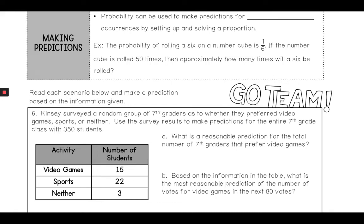Now the next thing is making predictions. You have the probability, it's used to make predictions, and this can be used for future occurrences by setting up and solving a proportion. You can't make a prediction on something in the past. It has to be something in the future because you're predicting what will happen. You can't predict what already happened because it's already done.